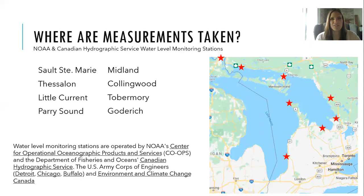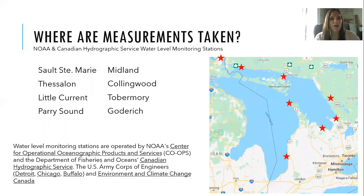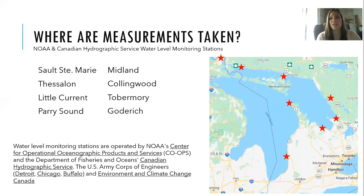There are eight water monitoring stations for lake levels on Lake Huron. As you can see on this map, they're scattered across the Canadian side. They are monitored by NOAA co-ops, the Department of Fisheries and Oceans, the Canadian Hydrographic Service, the U.S. Army Corps of Engineers, and Environment Climate Change Canada. So a lot of experts are coming together to analyze these water levels.